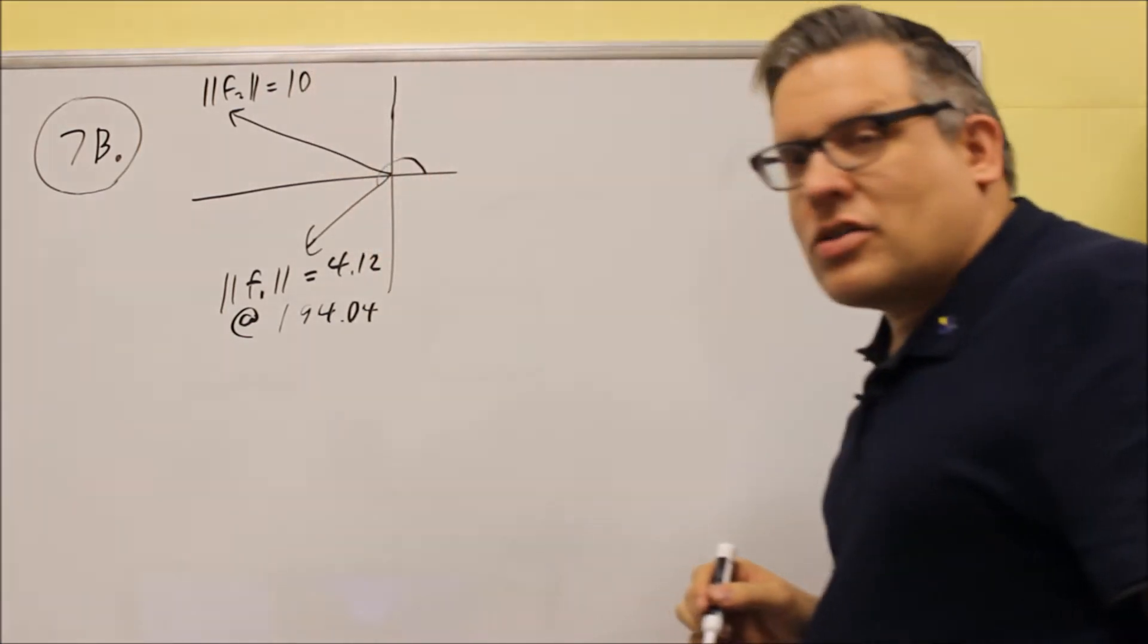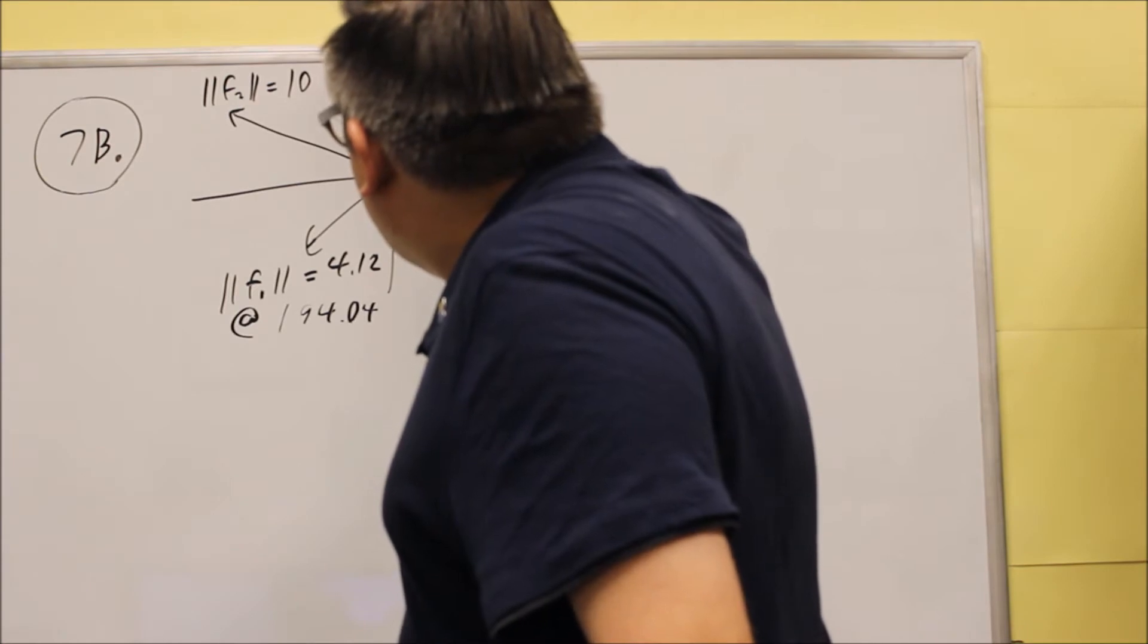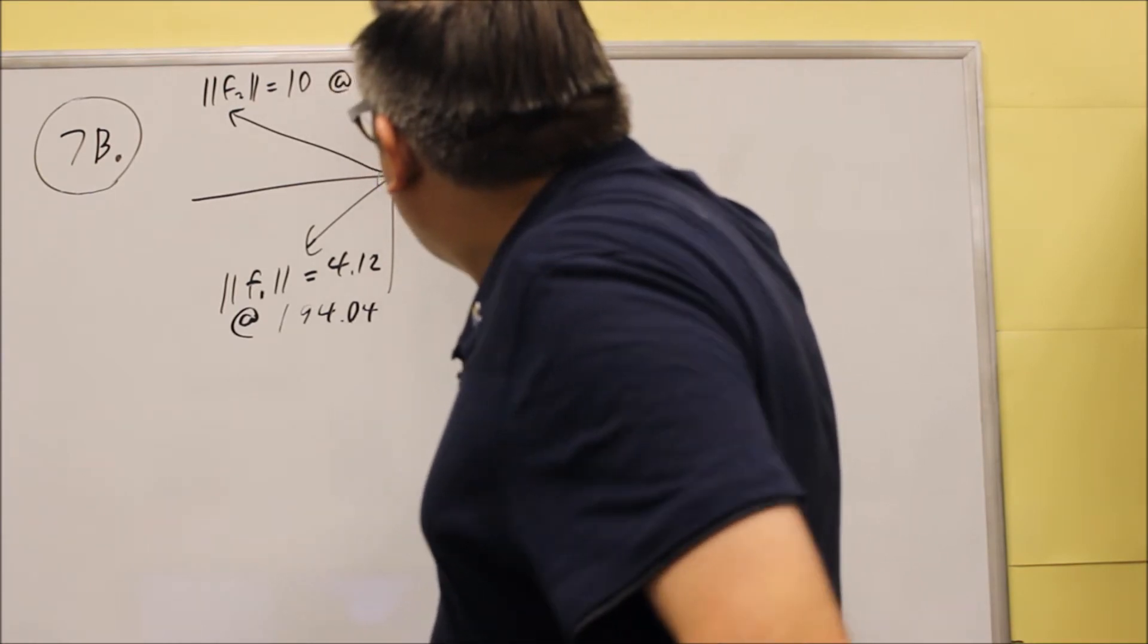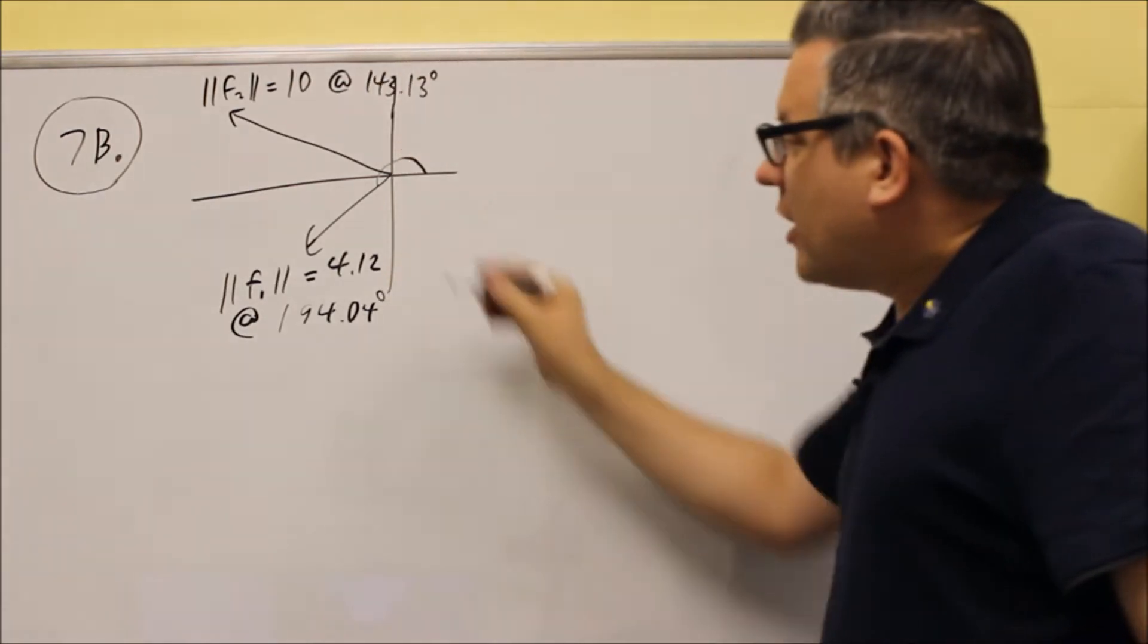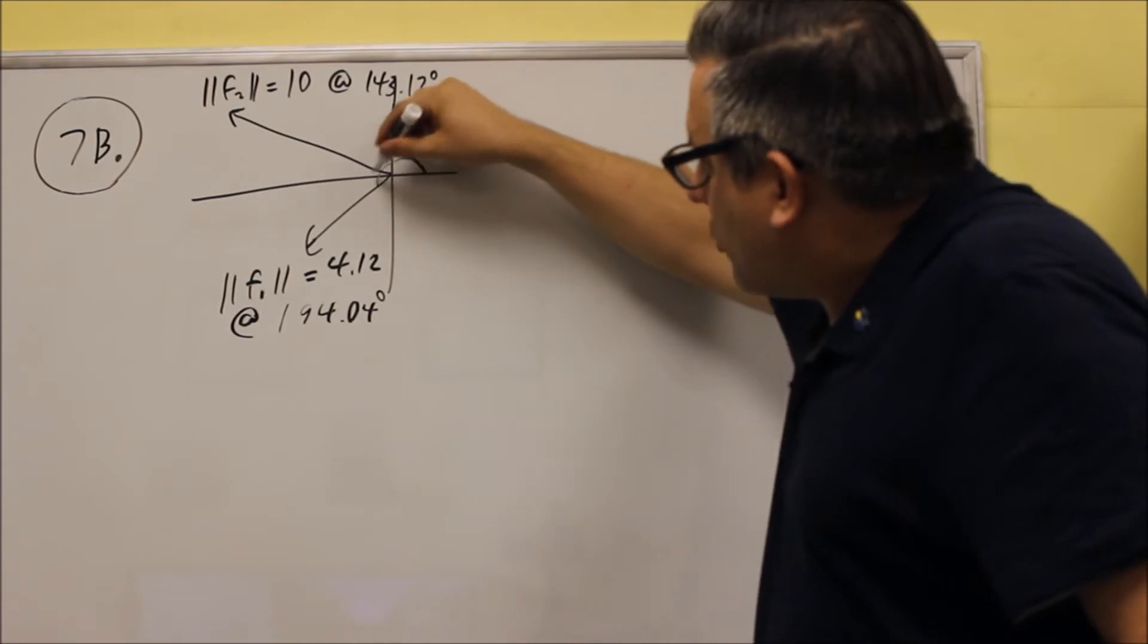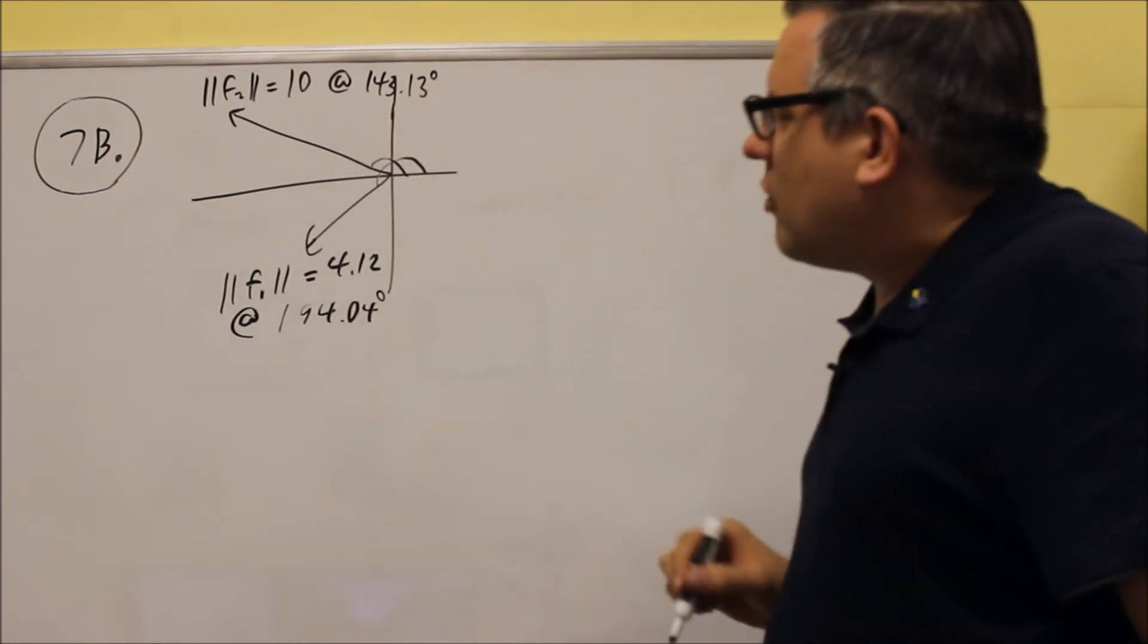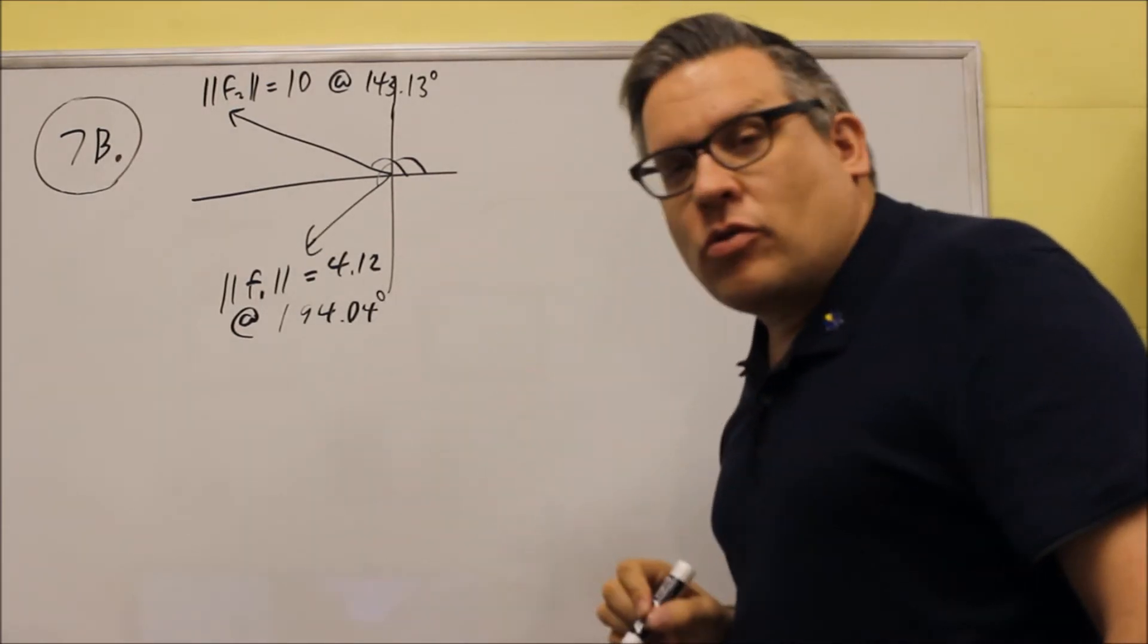This time the magnitude is given as 10, and again this will be at 143.13 degrees. So we have our magnitude and degrees for each one. So that first angle goes down to here, the other angle goes down to there, so we have both the magnitude and the angles are labeled there.